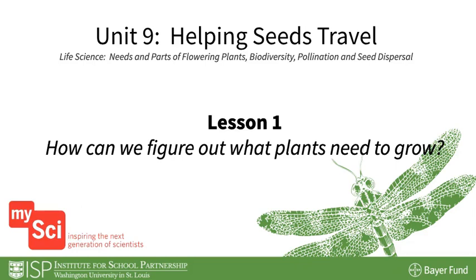Welcome to Lesson 1 of Unit 9, Helping Seeds Travel. In this lesson, students will work to answer the question: how can we figure out what plants need to grow? Students set up a plant growth experiment and collect background information. They figure out that we can set up experiments to show that plants need sunlight and water to grow healthily.